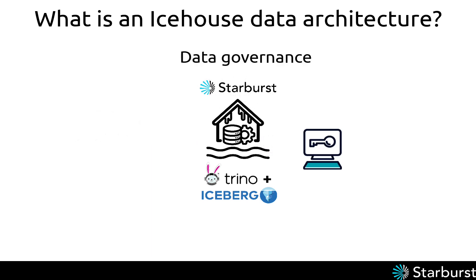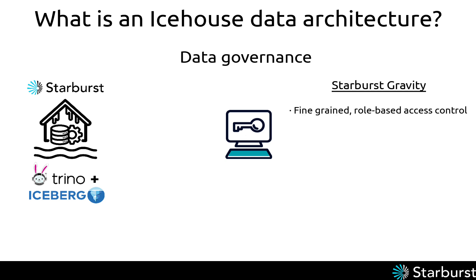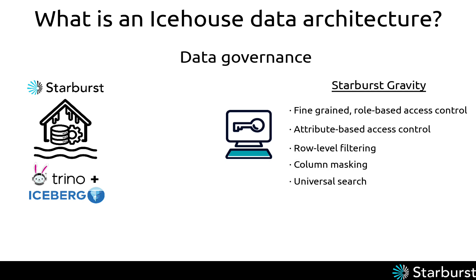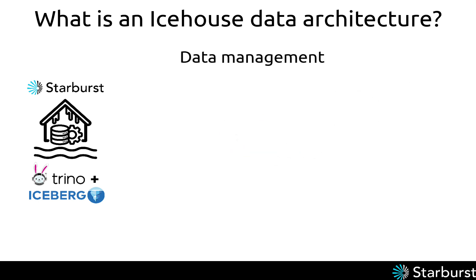The second ice house component is data governance. This includes features to help you access and manage data once it's secured in the ice house. Starburst Galaxy includes a unified governance layer known as Gravity, which provides fine-grained role-based access control and attribute-based access control, as well as row-level filtering, column masking, and universal search to facilitate data discovery.